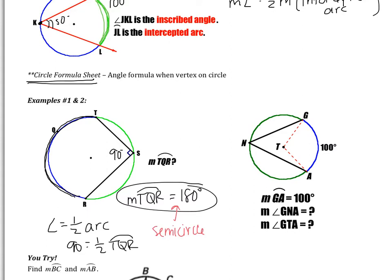Looking at example two, we are told that the measure of arc GA is 100 degrees. We are asked to find the measure of angle GNA and angle GTA. Starting with GNA — it's an inscribed angle because its vertex is on the circle. That means the angle will be half of the arc. If arc GA is 100 degrees, then angle GNA is going to be 50 degrees. Now angle GTA has its vertex at the center, so this is a central angle. If the vertex is at the center, then the angle will be equal to the arc, so GTA is going to be 100 degrees.